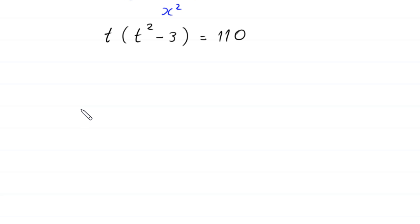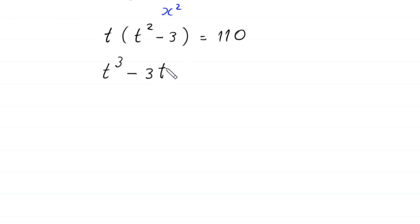We distribute t: t times t² becomes t³, and t times negative 3 is negative 3t. Moving 110 to the left-hand side gives t³ − 3t − 110 is equal to 0.